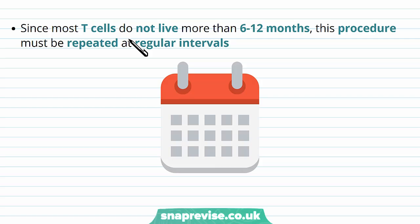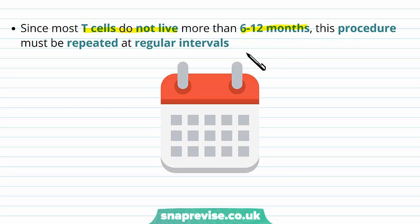However, T cells don't live forever — they do not live more than about 6 to 12 months and will die after that. Because the T cells the individual is making will still have the faulty allele, as they originally come from the patient's cells, this procedure has to be repeated at regular intervals. That pool of treated T cells won't last forever.